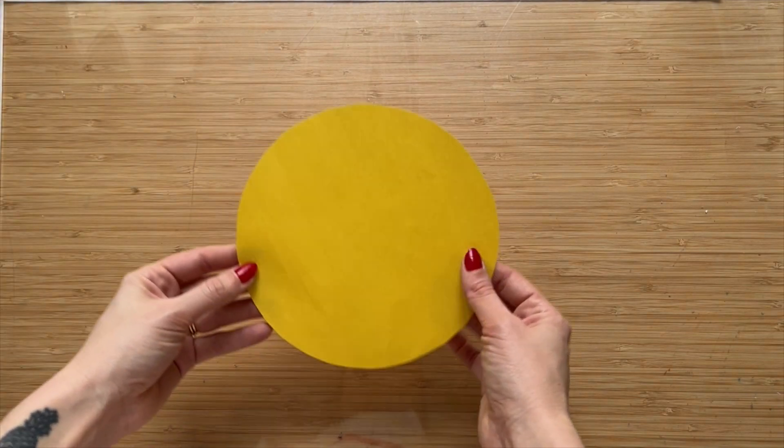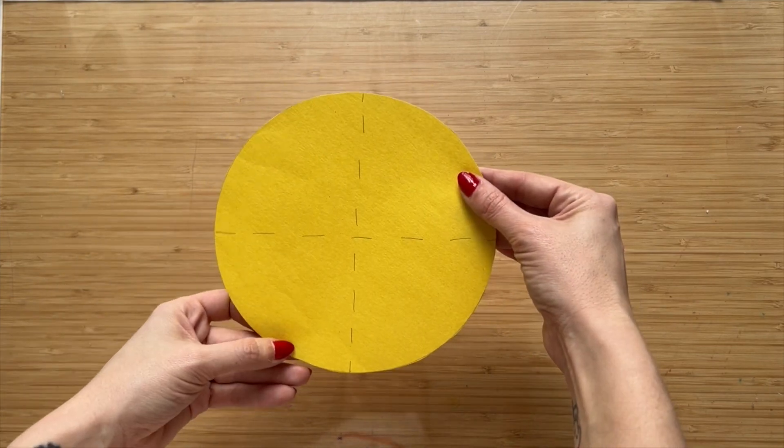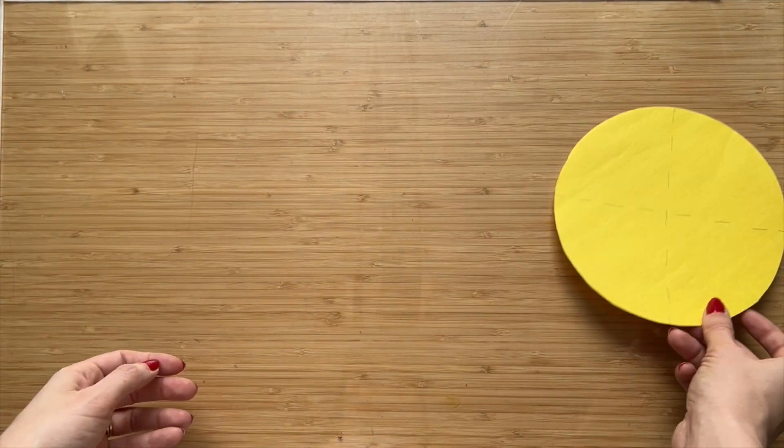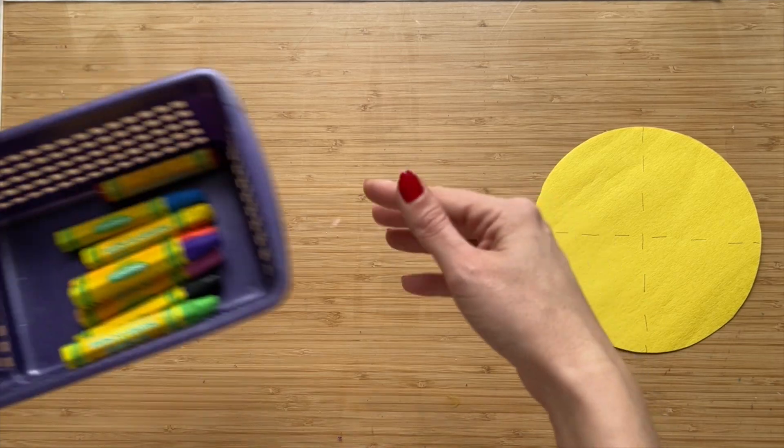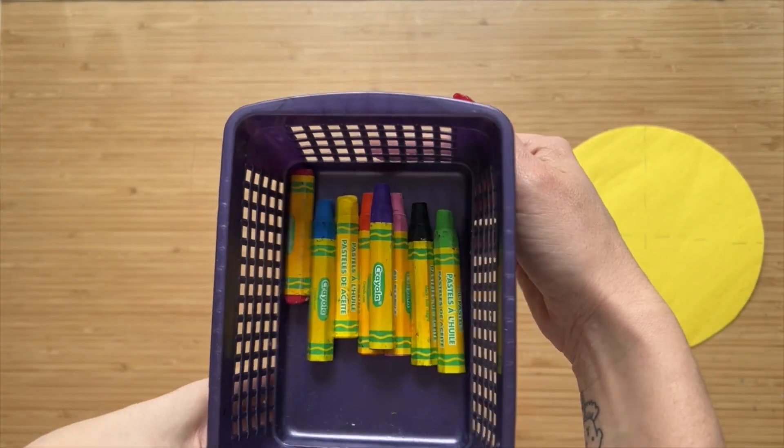The first is a pre-cut circle. There are lots of different colors, hopefully, to choose from, and there will be a dotted line on the back. That's important for later.